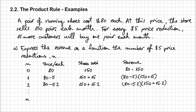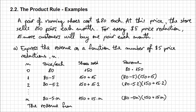For a general n number of price reductions, you can generalize these expressions: the price per unit is 80 minus 5n, and the number of pairs of shoes sold each month is 150 plus 15n. Thus the revenue function R(n) is the product of these two expressions: R(n) = (80 − 5n)(150 + 15n).